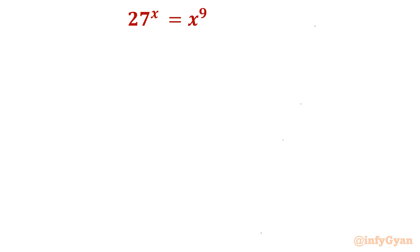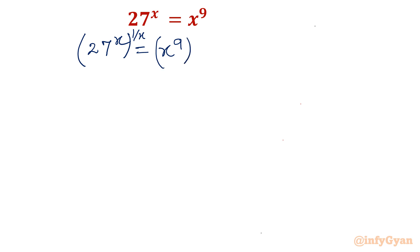I am writing our exponential equation as 27 power x equal to x power 9. Now I am raising both sides to the power 1 over x. One solution is straightaway simple — you can easily find out. It will give us 27, because of this exponent property.